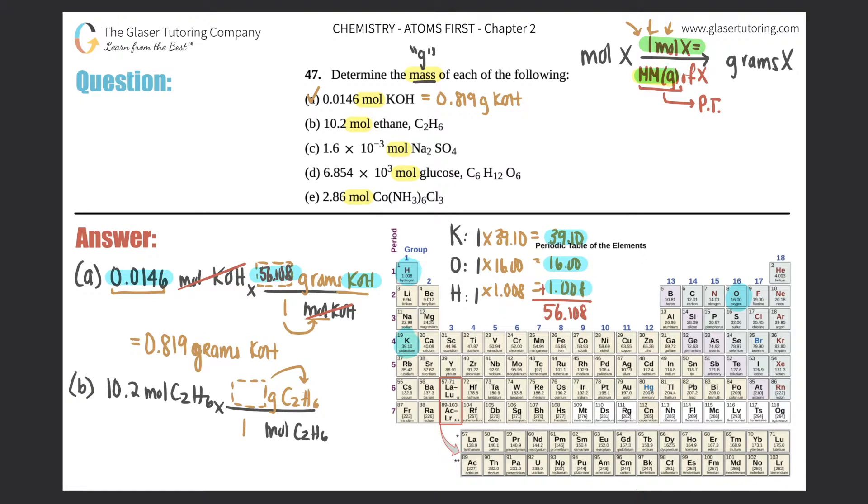This would be 30.068. Cancel out the word moles of C2H6, then you multiply by 10.2, and you get 307 because we need two sig figs - 307 grams of C2H6. That's the answer to the second one.